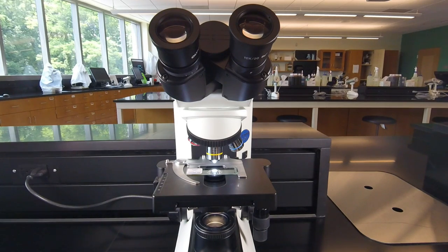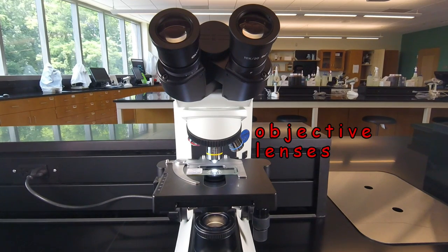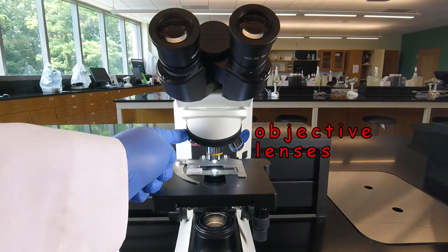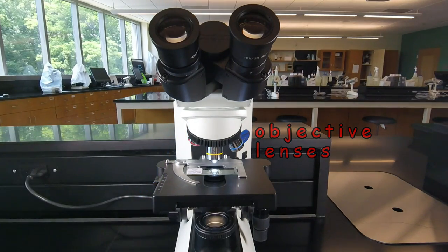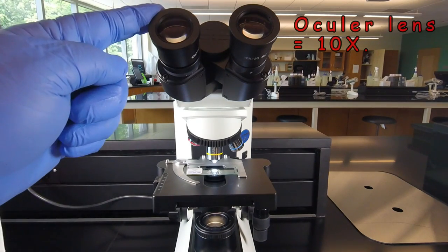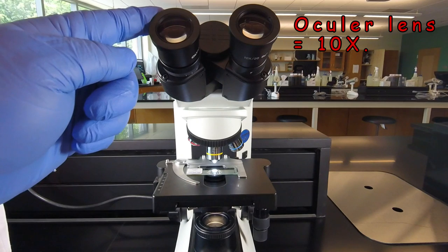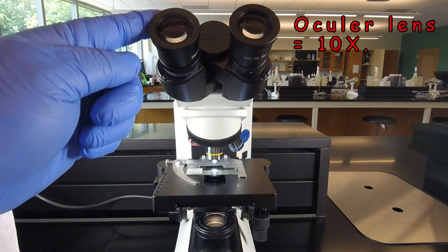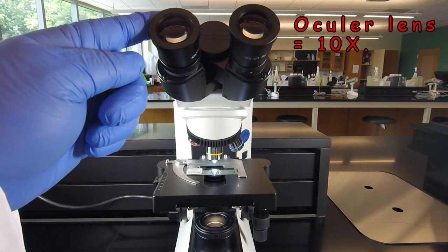To change magnifications on the microscope, we change the magnification of the objective lenses. In compound microscopes, we have two lenses that work as a set. The ocular lens or eyepiece, and that magnifies the image 10 times. That's pretty much standard with microscopes.